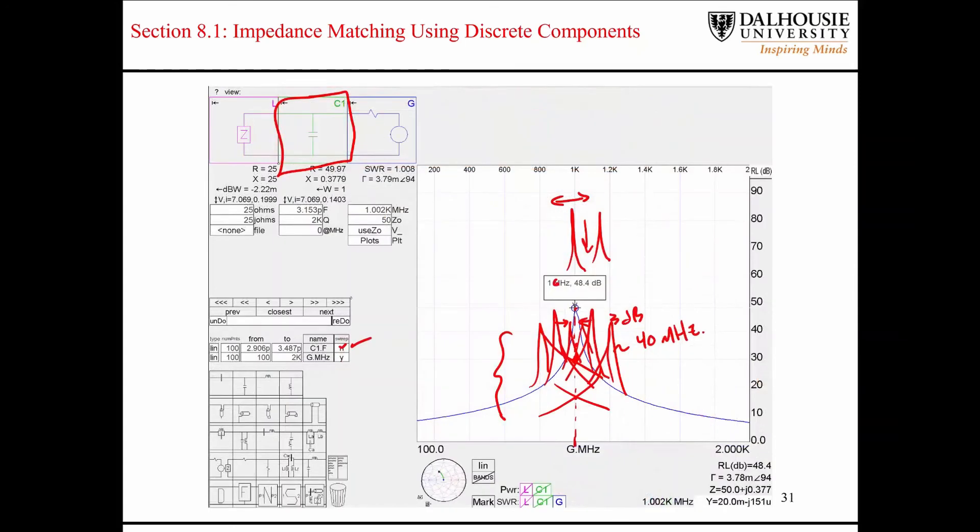That also kind of suggests that even for simple matching networks, it might make sense even if you can match a particular load using one component. It might make sense to make it a T network or a pi network or something like that, just so that it's more statistically stable when it comes to the sensitivity to the specific values of each of the components.